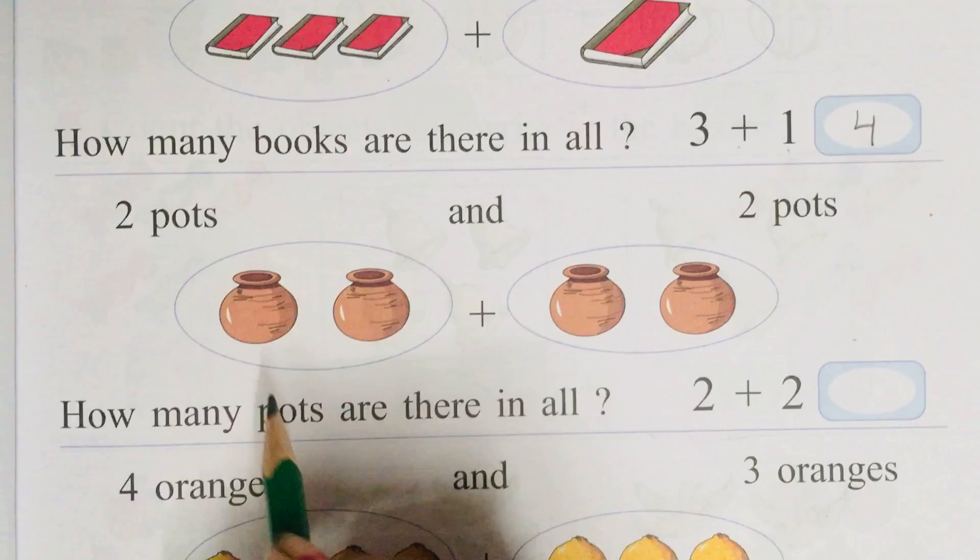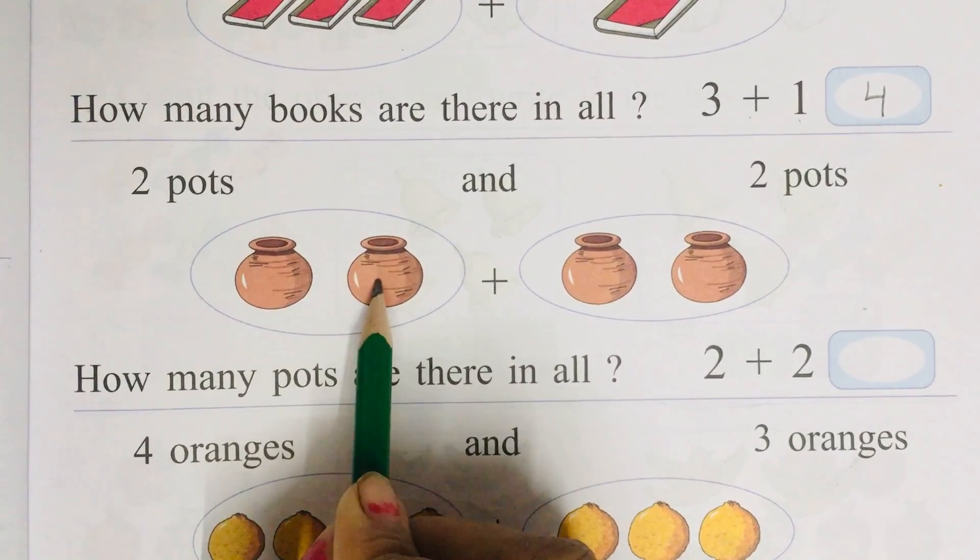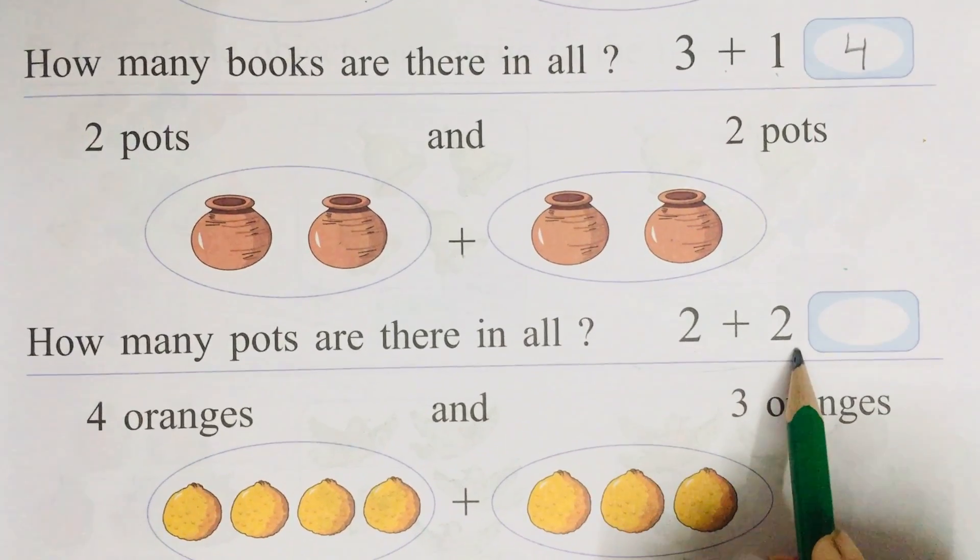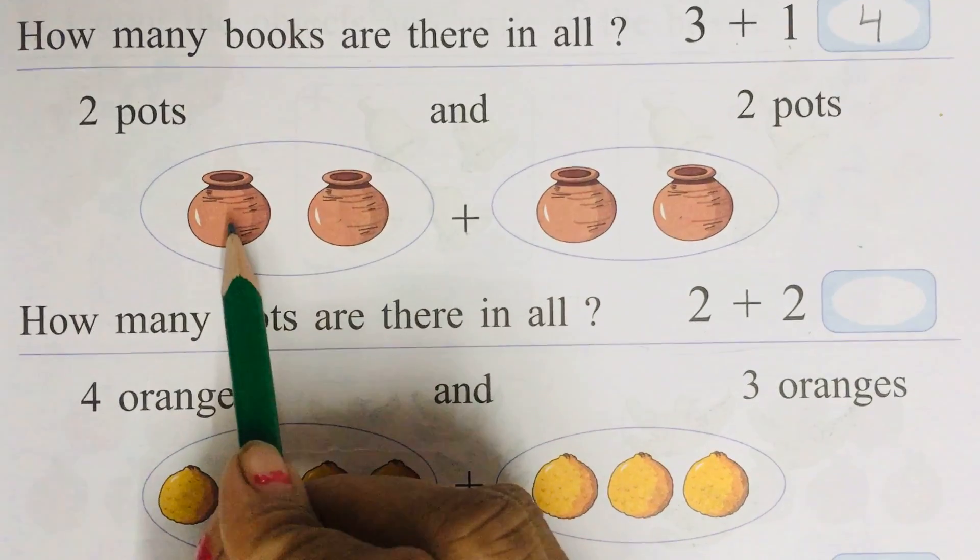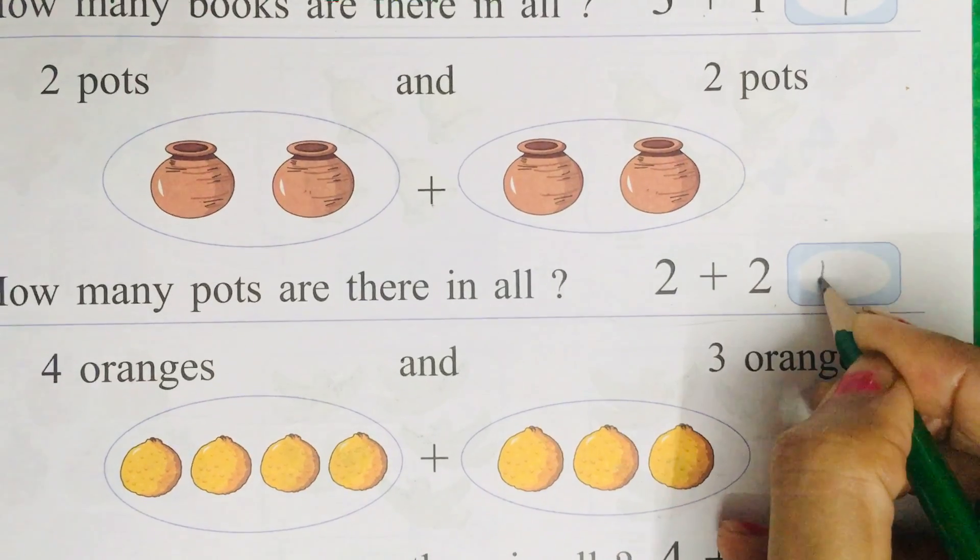4. See, there are 2 pots. Count them, 1, 2 plus 1, 2. So what is written? 2 plus 2. Now count all the pots, 1, 2, 3, 4. So what will we write? 4.